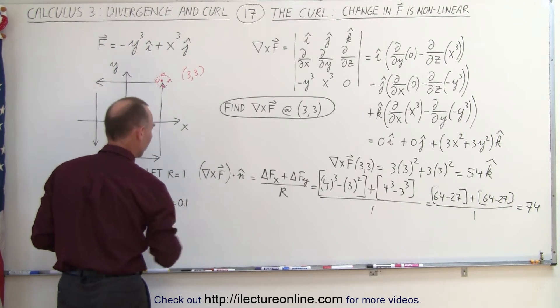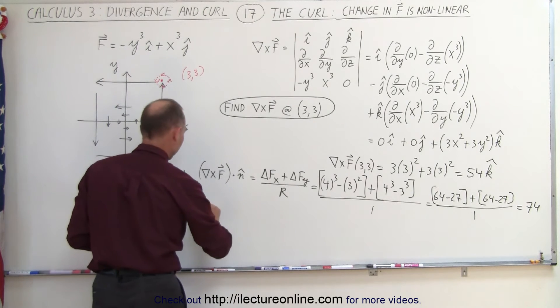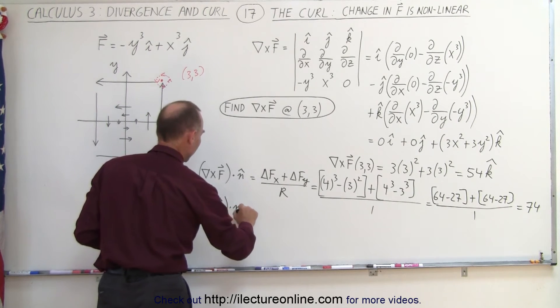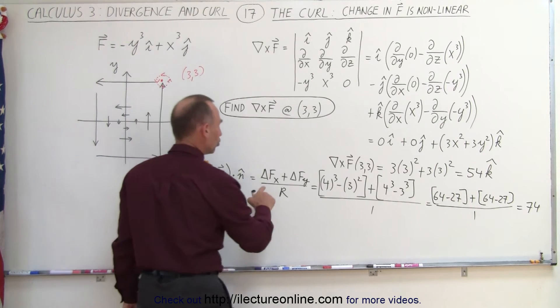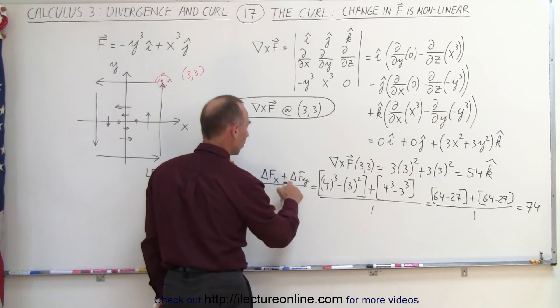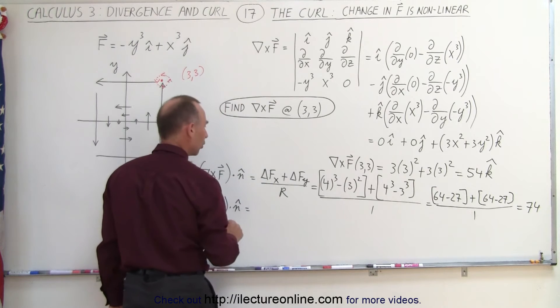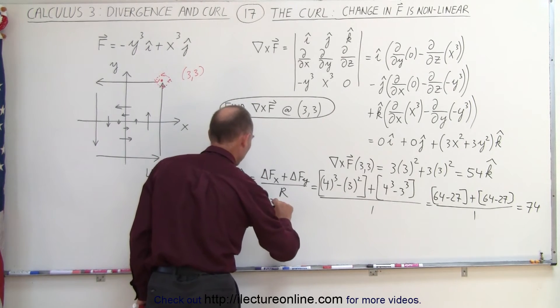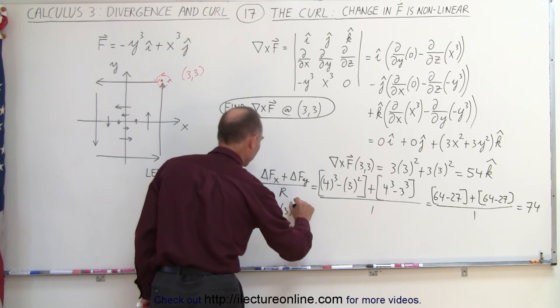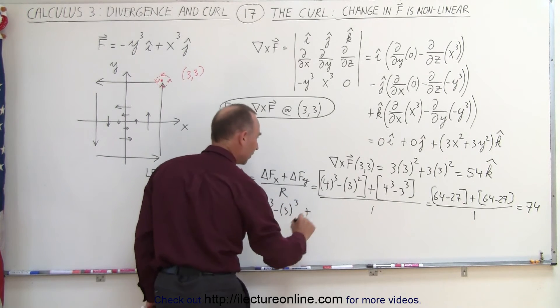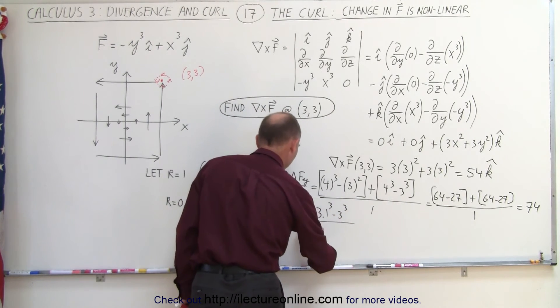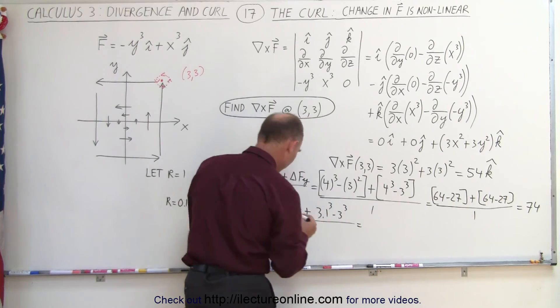r is now going to be equal to 0.1. And so now I calculate the same thing, dot n, and that's going to be the change in f plus the change in y divided by r. So when I go from 3 to 3.1, I take 3.1 cubed minus 3 cubed, and add to that 3.1 cubed minus 3 cubed, and take the whole thing and divide by 0.1. What does that equal to?